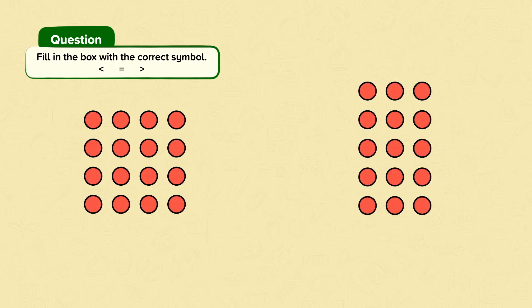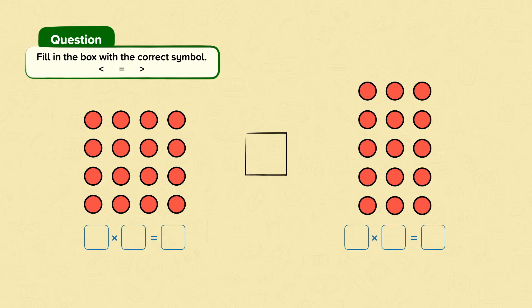Fill in the box with the correct symbol. We need to compare these two number arrays. This group shows four times four — we have four rows of four, or four groups of four, which is sixteen. The second group shows five rows of three, or five groups of three. This is the same as five times three, which is fifteen.